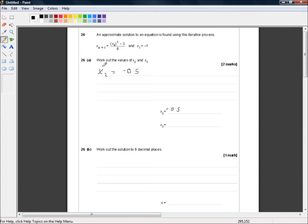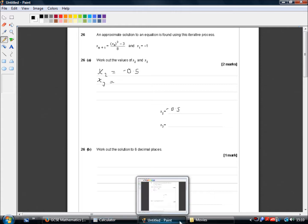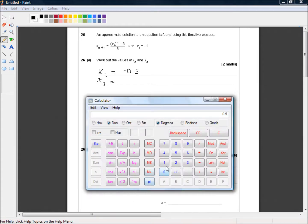Now we know what x2 is so we can calculate x3. x3 is equal to, and I start off with my x2 which is minus 0.5. And here we already have it in the calculator. So all I need to do is cube that, subtract 3 and divide by 8.